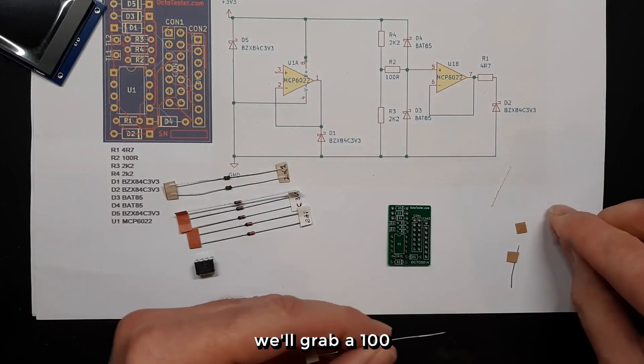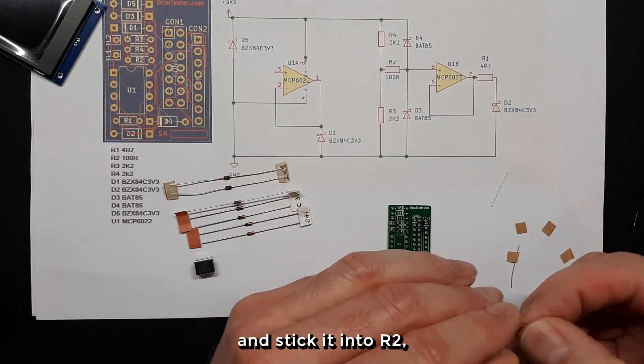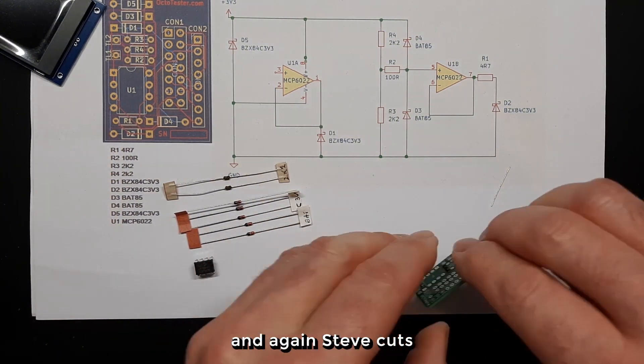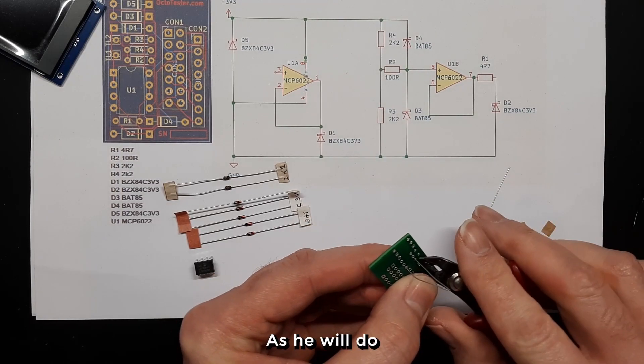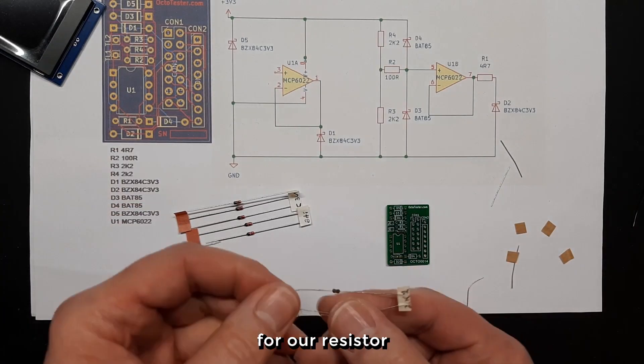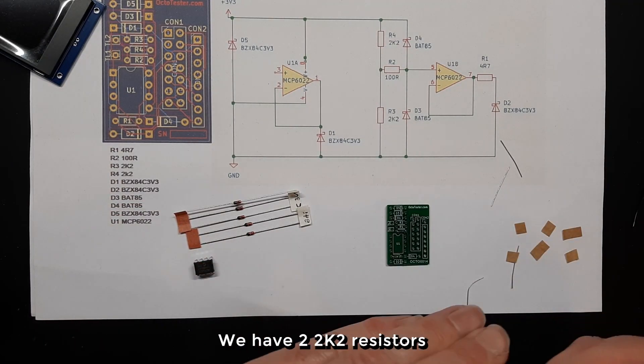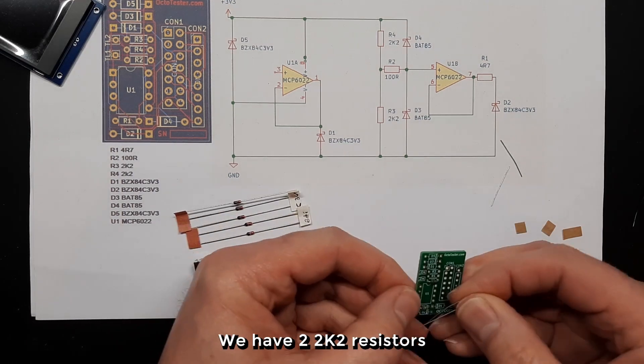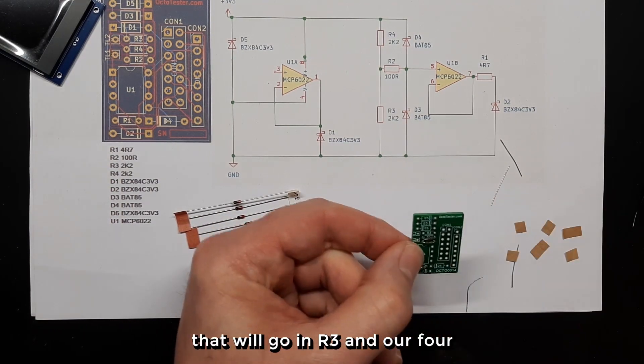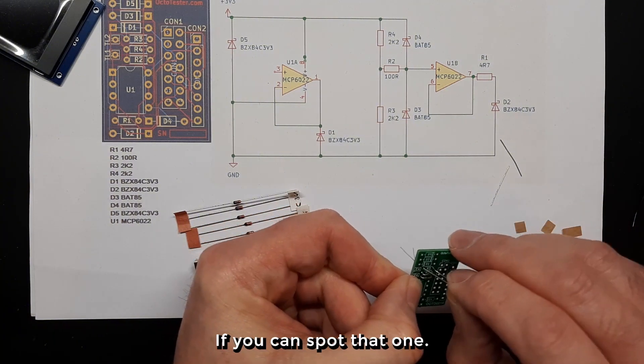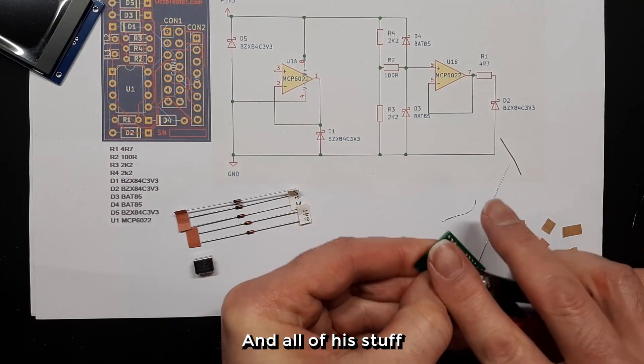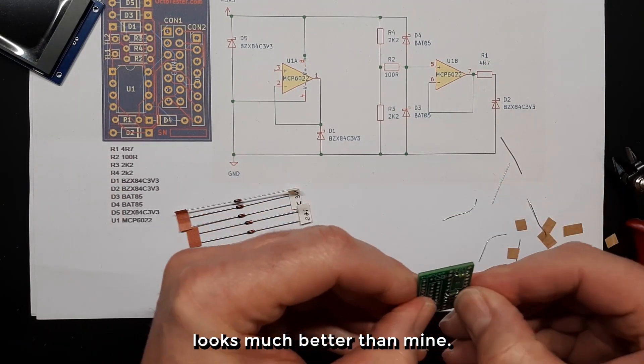For R2 we'll grab our 100 ohm resistor and stick it into R2, which is just above the IC. And again Steve cuts off the legs now as he will do for all these components. For our resistor 3 and resistor 4 we have two 2k2 resistors that will go in R3 and R4 just above R2. Steve's demonstrating this perfectly because he's very neat and all of his stuff looks much better than mine.